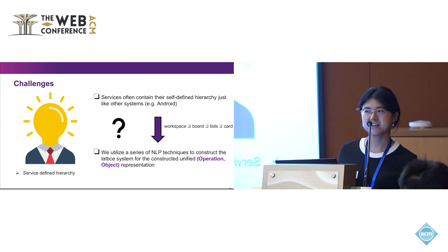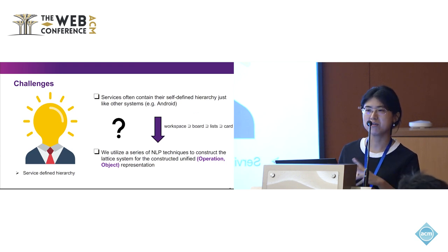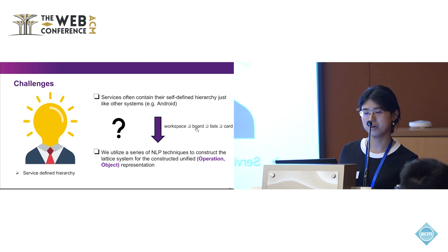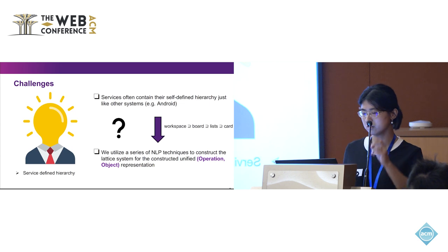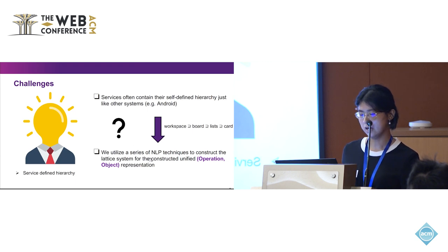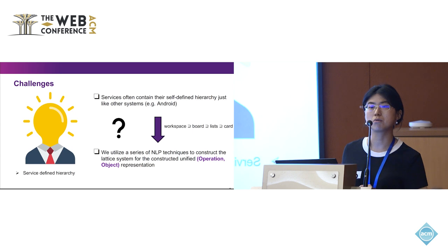The second challenge is permission hierarchies, similar to Android, Windows, or Unix systems. For example, in one online editor service, workspace is higher in the hierarchy compared with board, list, and card. If we didn't account for this hierarchy using the large language model, we might consider board and card as semantically similar and treat them as the same operation — but board is actually higher in the hierarchy than card, so we cannot mix them together. To handle this, we use a series of NLP techniques to construct the system and preserve the hierarchy in the operation-object pairs.